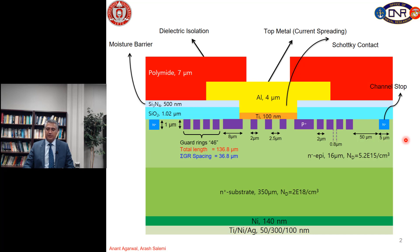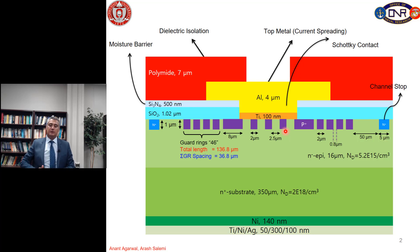As discussed in previous lectures, a cross-sectional view of a JBS diode has different parts. First, we need a drift layer of silicon carbide — 16 micrometers thick with a doping concentration of 5.2×10¹⁵ per cubic centimeter. In the active area, we have P+ regions with a width of 2 micrometers and spacing of 2.5 micrometers. In the termination area, we have 46 guard rings with a width of 2 micrometers and spacing of 0.8 micrometers, giving a total length of 136.8 micrometers and total spacing of 36.8 micrometers.